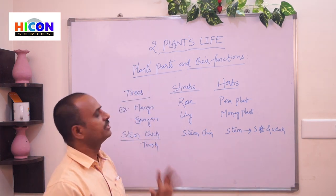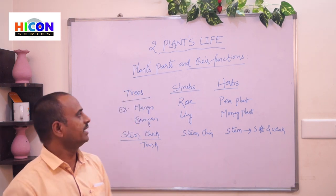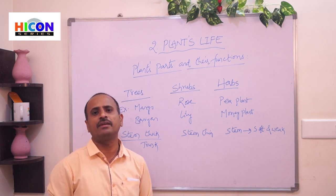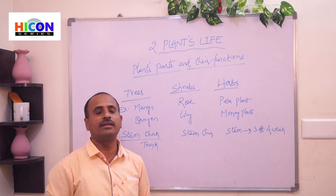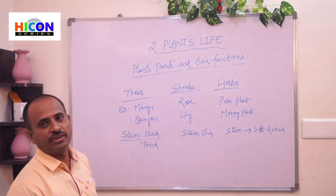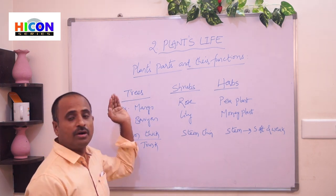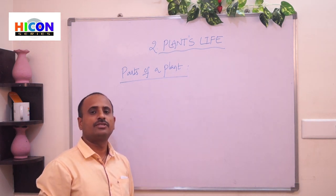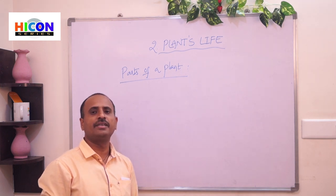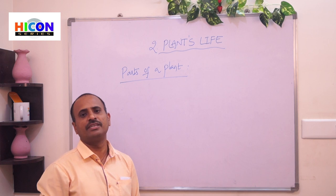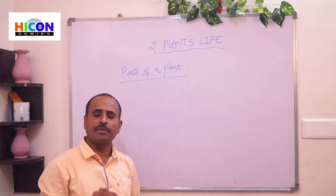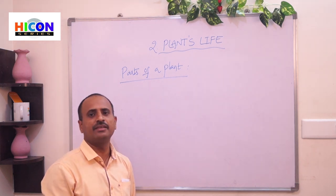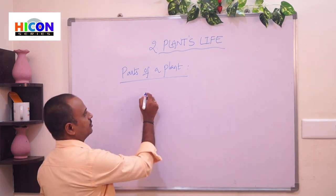Now let us learn what are the parts of the plant — the main parts and their different functions. Children, look at the picture. In this picture you are observing a plant with its different parts. The part of the plant which grows below the soil and holds the plant firmly in the soil is called roots.